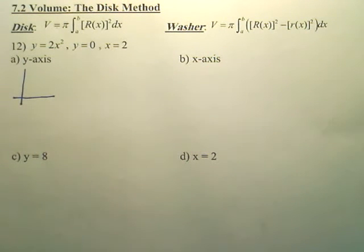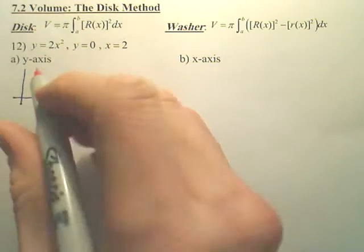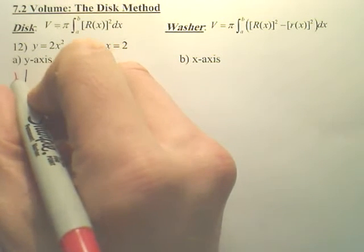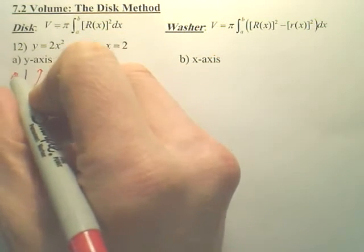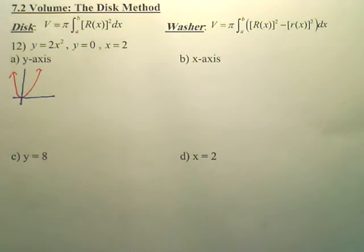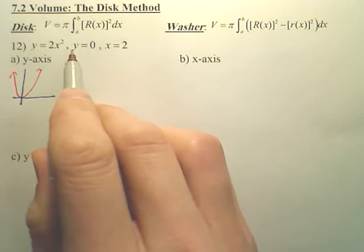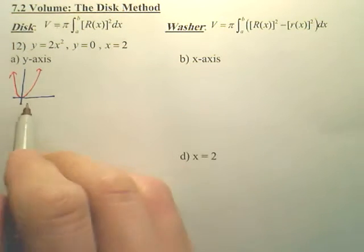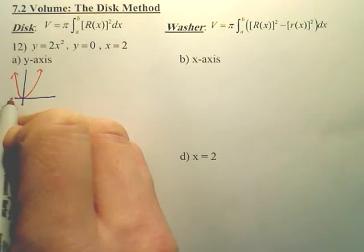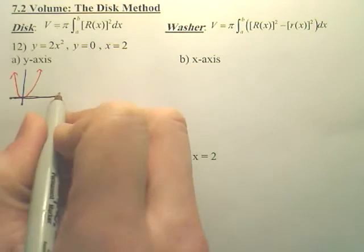So if we make a quick sketch of this, you should know the first equation, 2x squared is a parabola. So it's going to look something like that. Now the next two equations, y equals 0. Isn't that the x-axis? So y equals 0, isn't that just this axis right here, the x-axis?